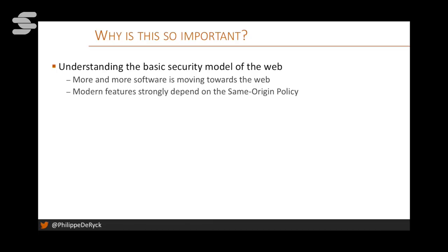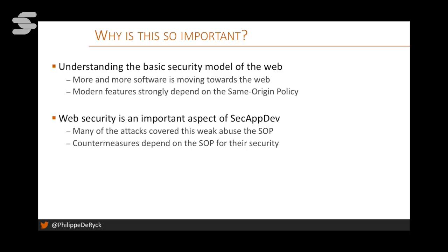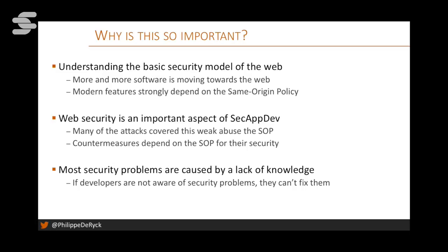Why is this important? First, this is the basic security model of the web. If you don't understand it, it's very hard to understand defenses like those against cross-site request forgery, because they're built on top of this same-origin policy. Web security is very important — we have sessions on it here. A lot of security problems are caused by a lack of knowledge: if you don't know about a security problem or how to fix it, it won't be fixed in your code. If you've never heard of cross-site request forgery, you've probably never implemented a defense against it, meaning your application may be vulnerable.